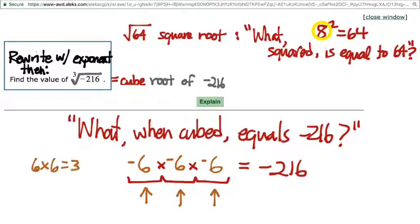Six squared is 36. And if I multiply 36 by 6, carry the 3. 3 times 6 is 18, plus 3. Do 216. All right. And so, the cube root of negative 216 is negative 6.